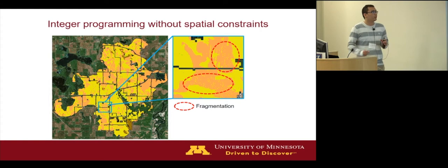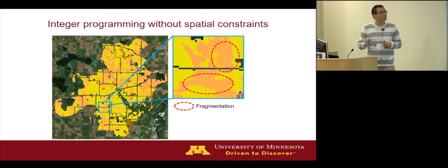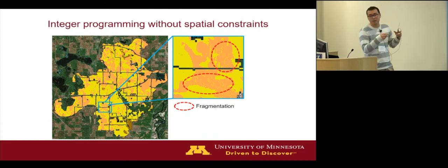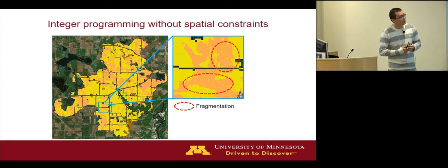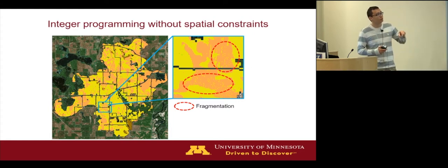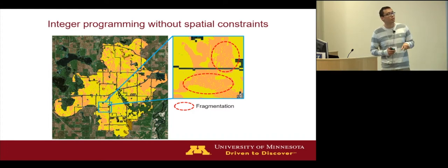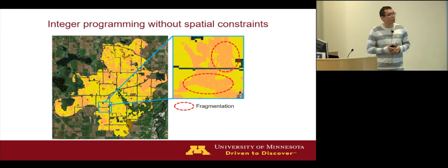We conducted a case study in the Seven Mile Creek watershed in Minnesota. Shown here is the solution using conventional integer programming without any spatial constraints. In the zoom-in window on the right, you can see that without spatial constraints there is a large amount of fragmentation in the result — all those very tiny small patches.